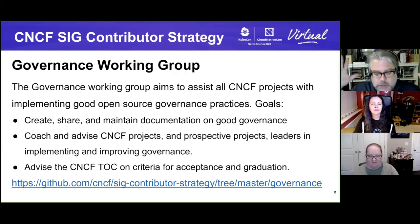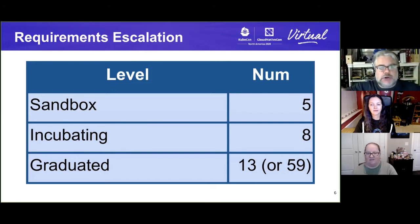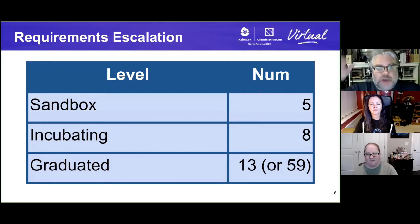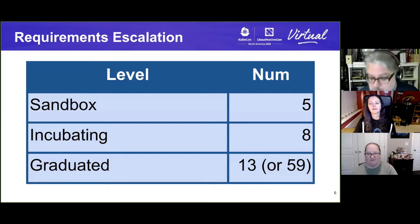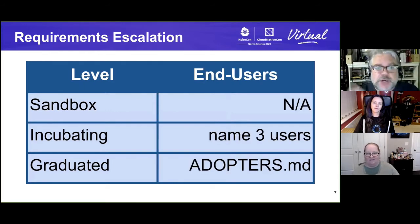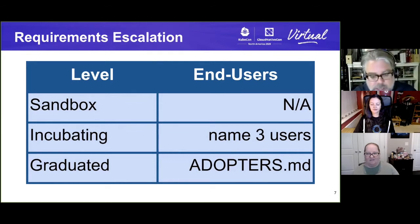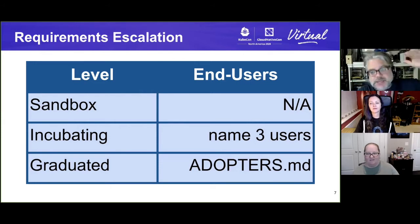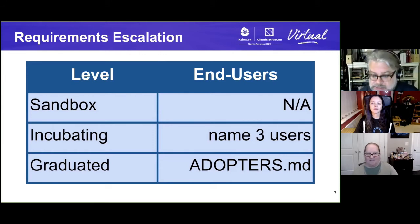When you look at the requirements for the CNCF, there are three maturity levels: Sandbox, Incubating, and Graduated. The number of requirements goes up with each level — Sandbox has about five, Incubating has eight, and Graduated has 13, or 59 if you count all sub-requirements. The depth also increases: at Sandbox you're not expected to have referenceable end users, at Incubating you need at least three, and at Graduated you're expected to maintain a growing adopters list demonstrating the project's success.